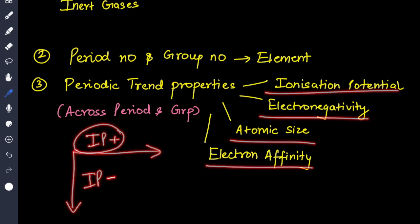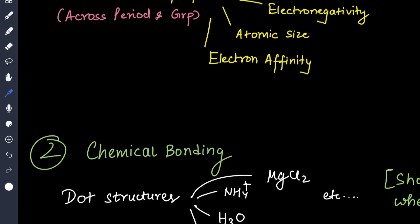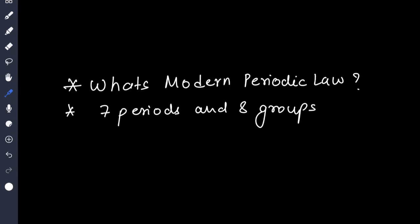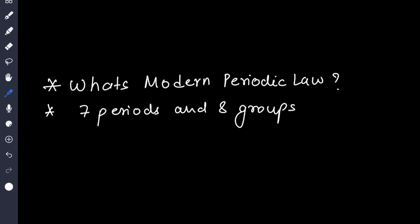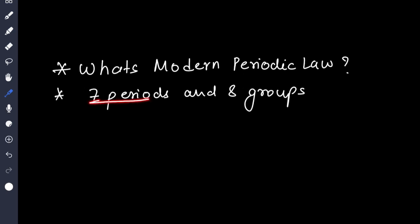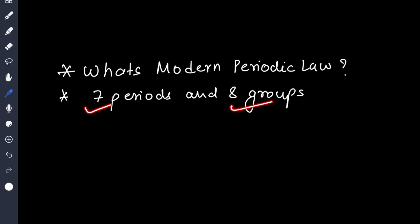They'll ask you to arrange the elements in increasing order of IP or any other periodic trend property. Next question which may be asked: what's modern periodic law? It is based on atomic number. Then how many groups and periods are there in periodic table? So seven periods and eight groups.